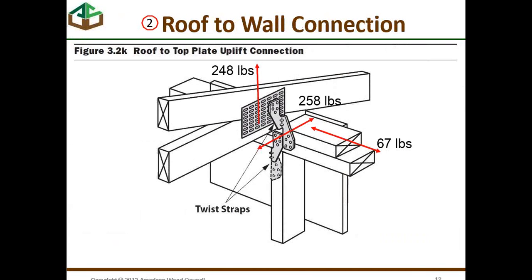Connection number 2 is the roof-to-wall connection. Here we have taken the load from the framing into — in this case illustrated as a truss — and these loads come from the two previous webinars. We have a 248-pound uplift load at this connection, a 258-pound load perpendicular to the wall, and a 67-pound shear load in the plane of the wall. So we have loads in three directions at this one particular connector.